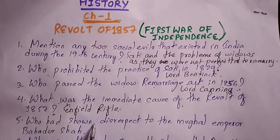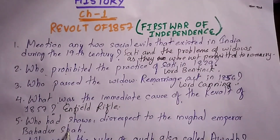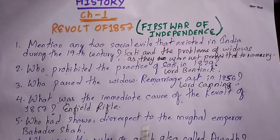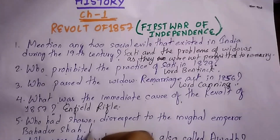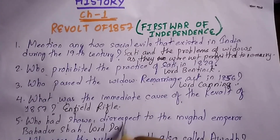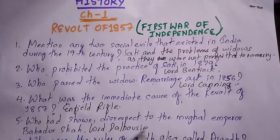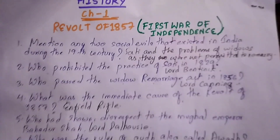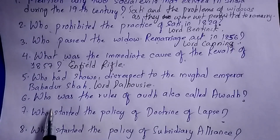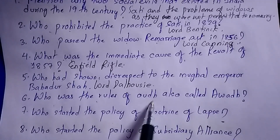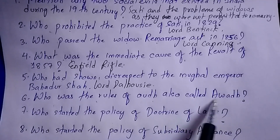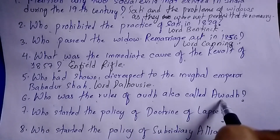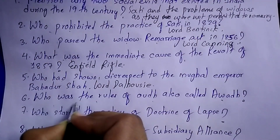Question five: Who had shown disrespect to the Mughal Emperor Bahadur Shah? It is Lord Dalhousie. Next question: Who was the ruler of Awadh? It is Vajid Ali Shah.